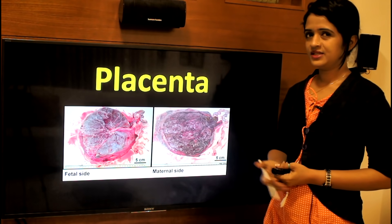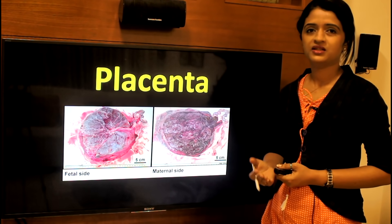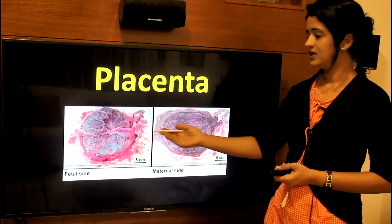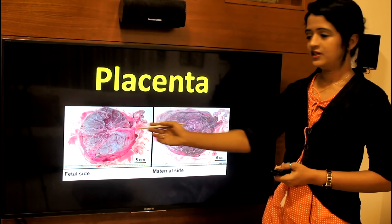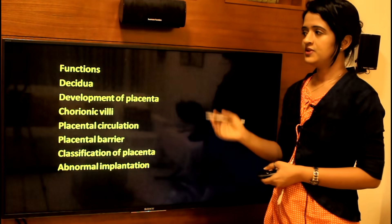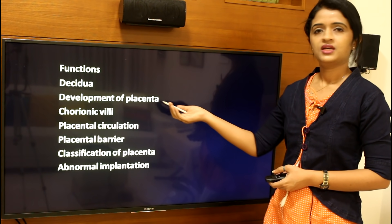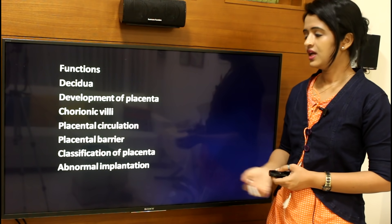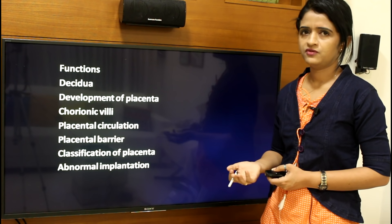Before you view this session, I would like you to view my previous sessions on development in the first, second, and third week so that you get continuity with the topic. Placenta, as we all know, has a fetal side and a maternal side — it is a discoid organ. In this session I will be dealing with the functions of placenta, the decidua, development of placenta, chorionic villi, placental circulation, placental barrier, classification of placenta, and abnormal implantation. The main functions of placenta are nutrition, respiration, excretion, and the formation of placental hormones.